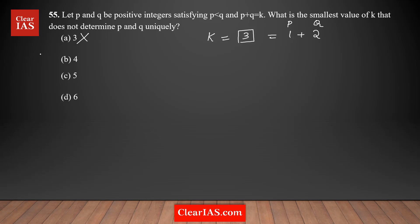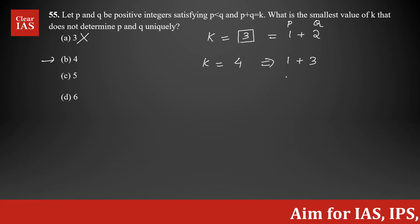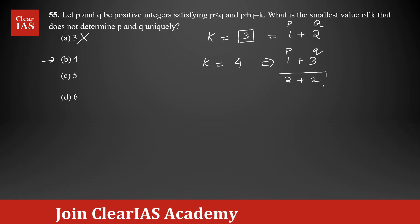Next, let's try option B where K = 4. How do you get a sum of 4? Different combinations: 1 + 3 and 2 + 2. For the first one, 1 + 3, since P < Q, P = 1 and Q = 3. That's the only possibility. The second one, 2 + 2, is not possible because P must be less than Q, meaning they must be different.